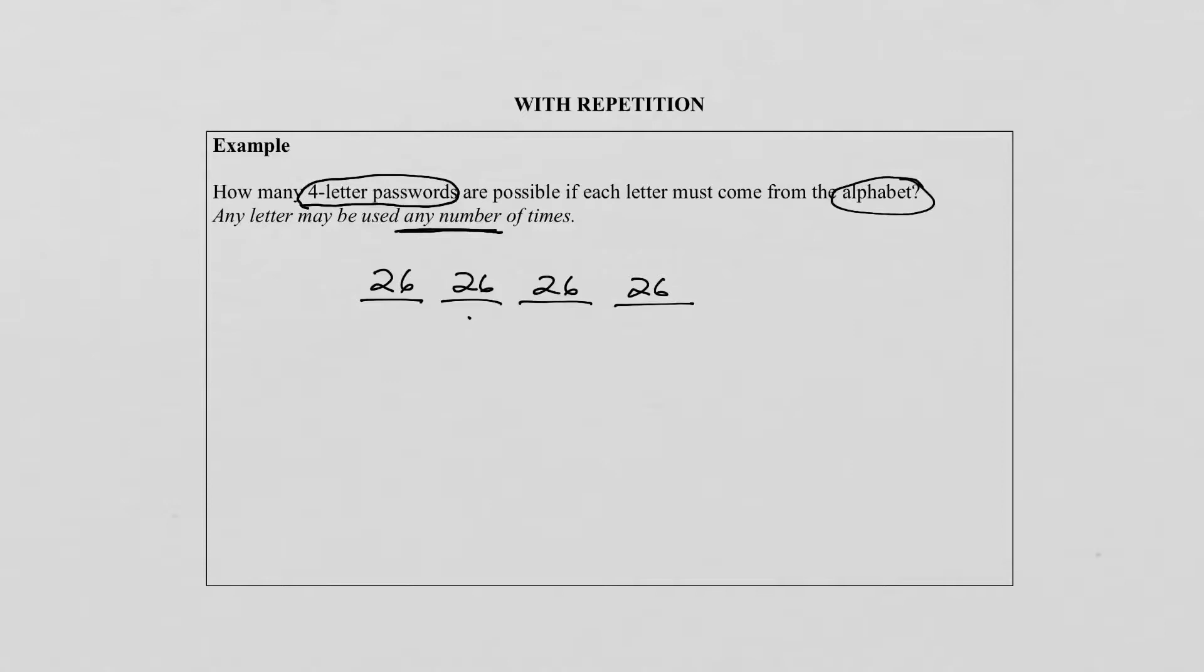And you will notice in our next episode we're going to look at without repetition and you will see then the difference. So what is our answer? To get our answer you will remember that we multiply all these which will give us 26 to the exponent of 4. And please use your calculator to solve this. It's quite a big answer.